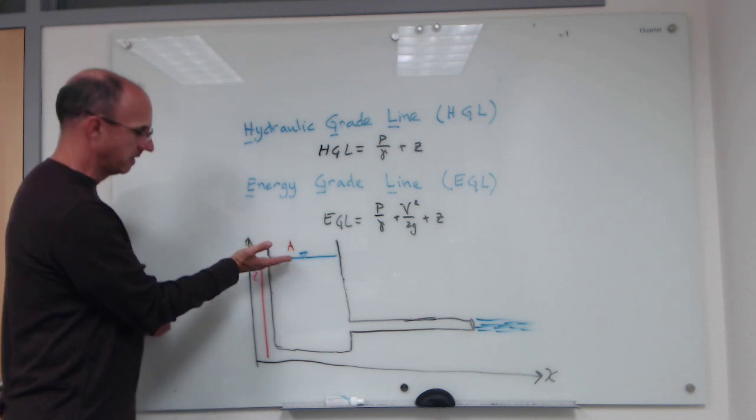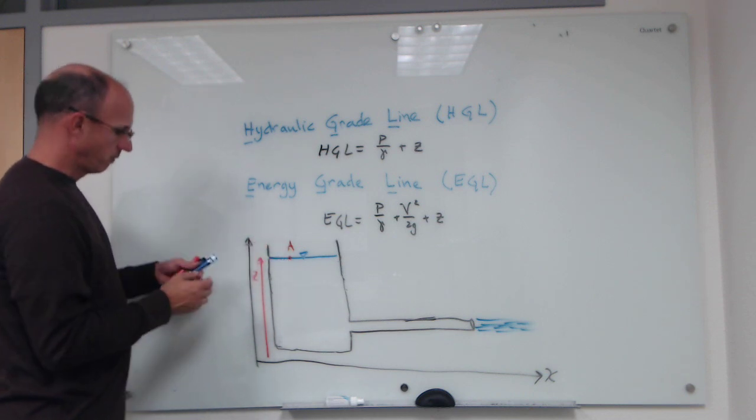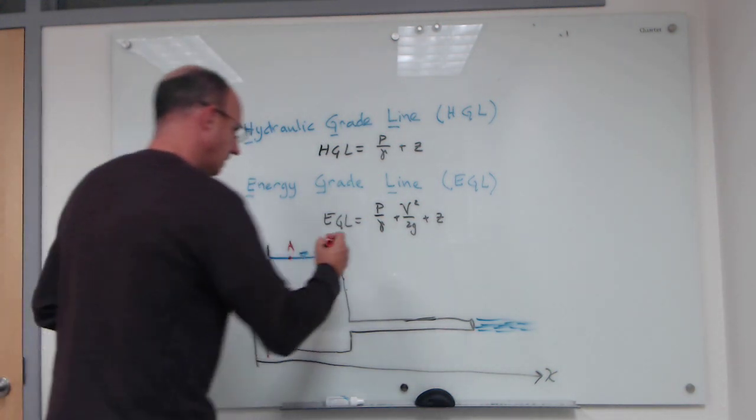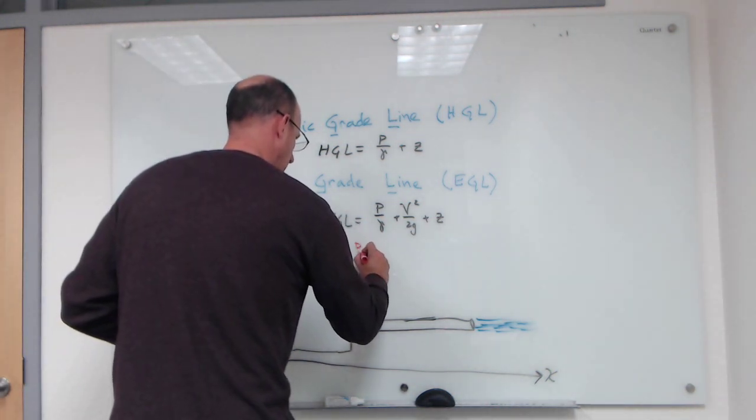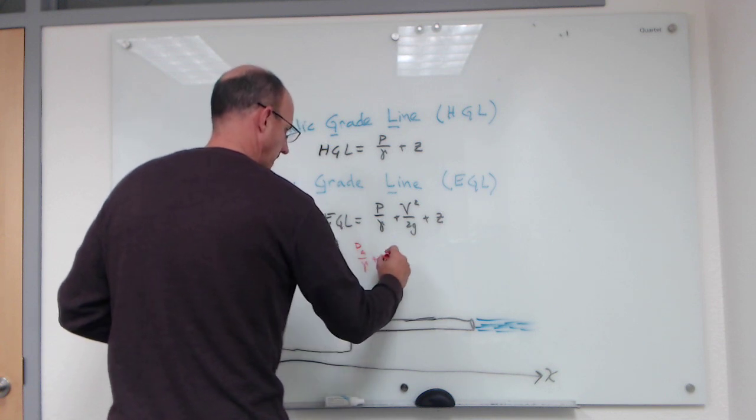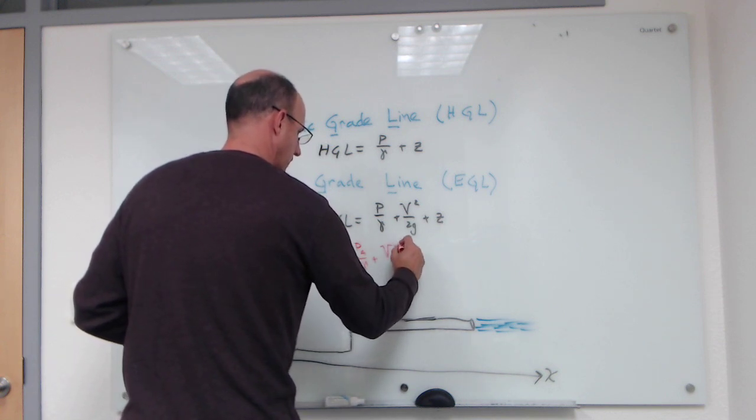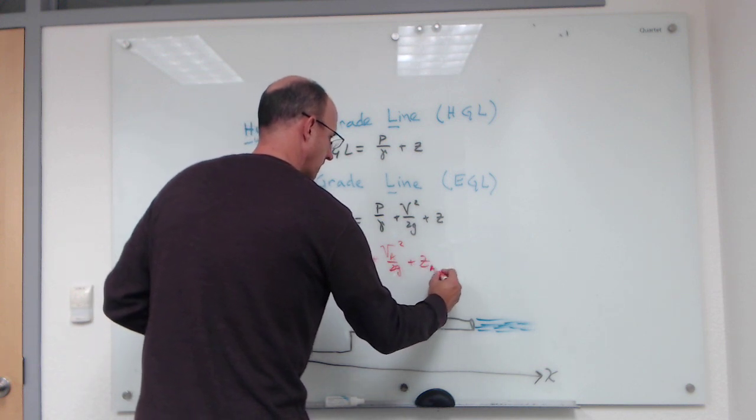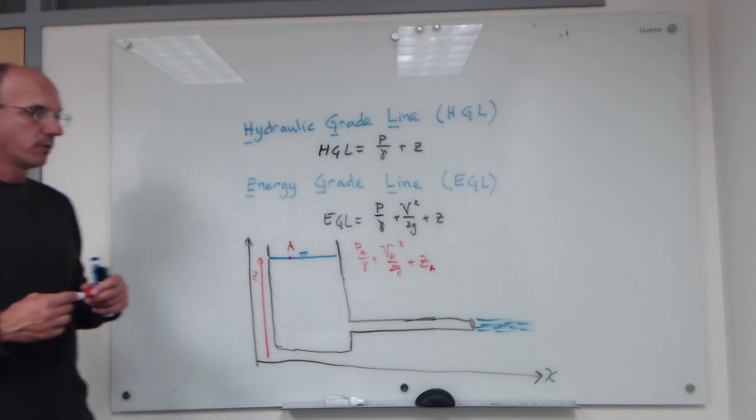Well, if we pick out a point here, A, and we write p over A divided by gamma plus v_A squared over 2g plus the elevation at A...